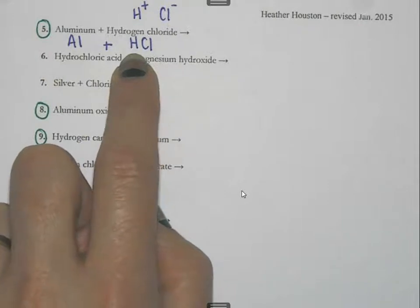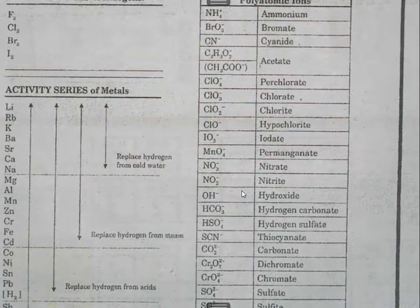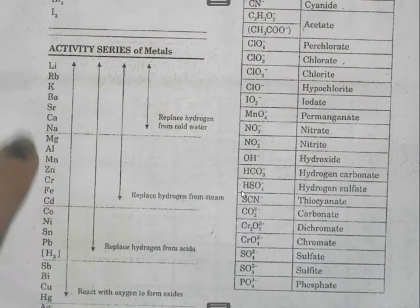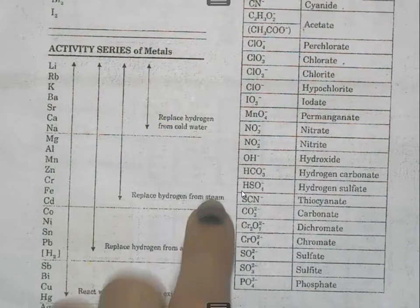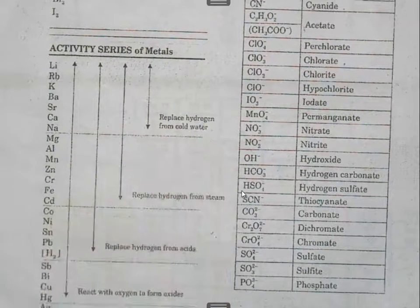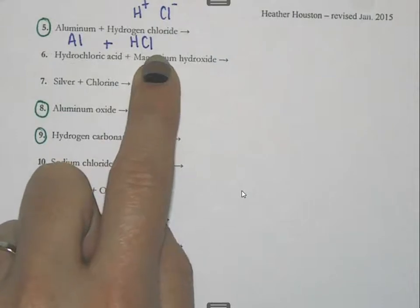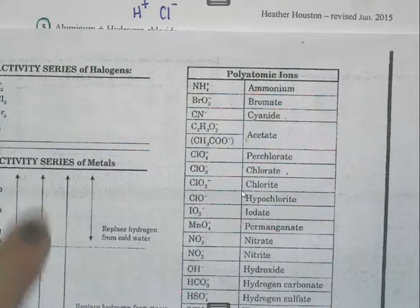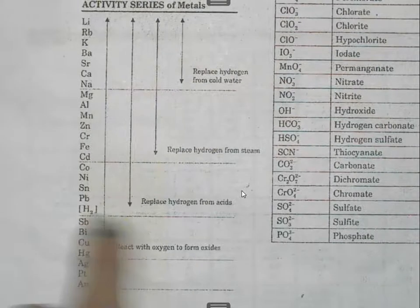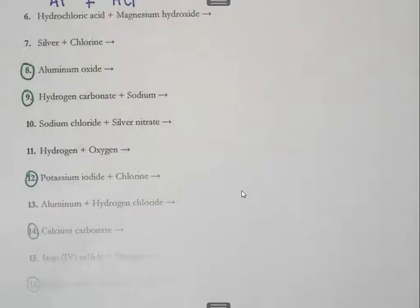I need to look at my activity series on the reference table to find aluminum. Hydrogen is also on the list — it says 'replace hydrogen from acids, from steam, from cold water.' Anything that has hydrogen at the beginning should be thought of as an acid. Everything from a certain point down on the activity series will replace hydrogen from acids, and aluminum falls within that section.